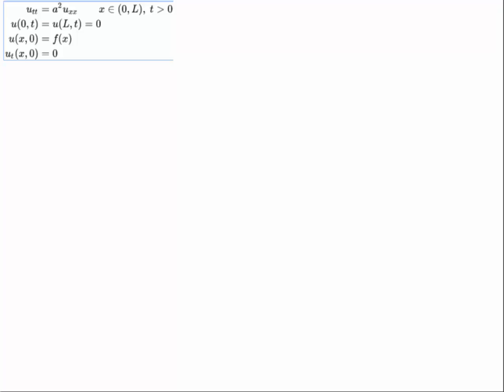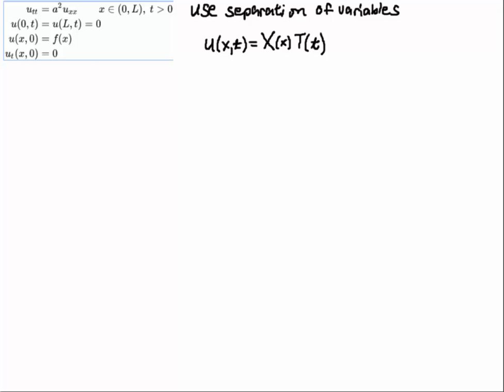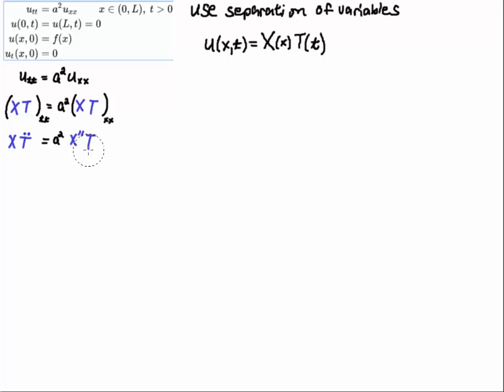Here's our PDE at the top along with the boundary conditions. Notice we have two initial conditions — we're going to need these two initial conditions because we have two time derivatives. We're going to use separation of variables, so I'm going to formally assume I can write my solution as a product of two functions. Capital X is completely a function of x, and capital T is solely a function of little t. I substitute this ansatz into the PDE.